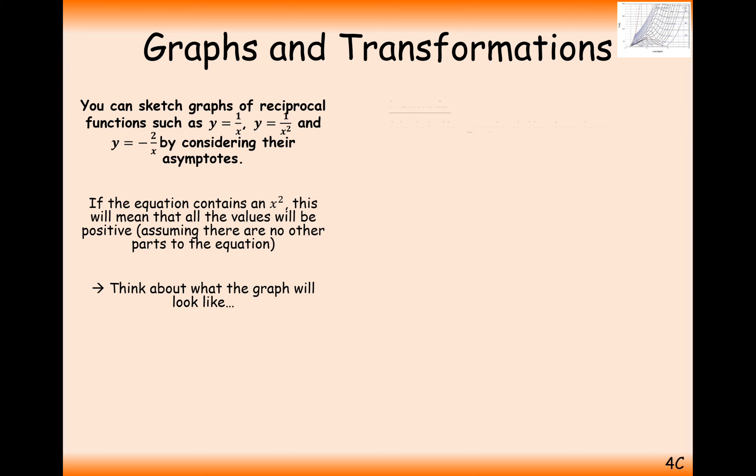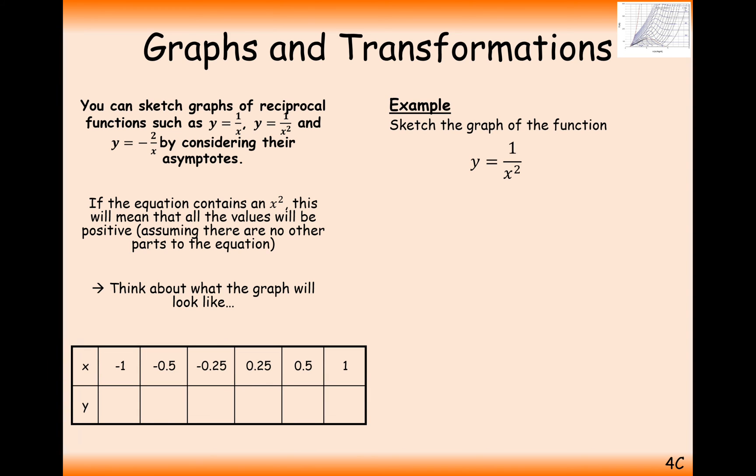Let's consider the 1 over x squared graph now. Let's do this by plotting some coordinates. So first what we need to do is square our coordinates and then do 1 over that answer. So in this case here, minus 1 squared is 1, 1 over 1 is 1.